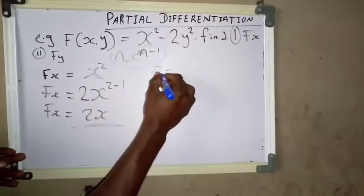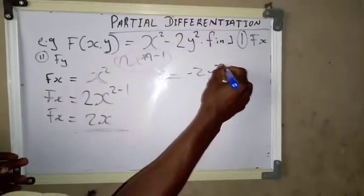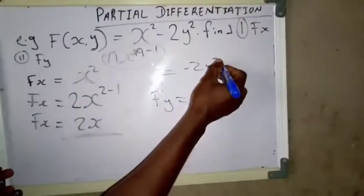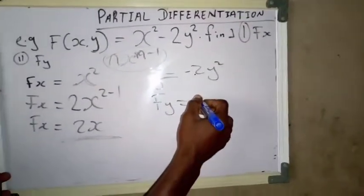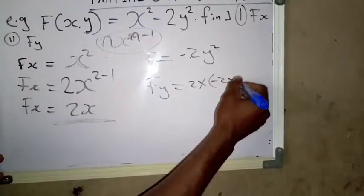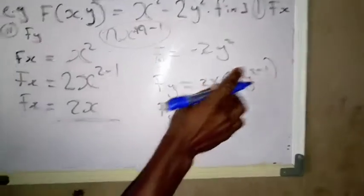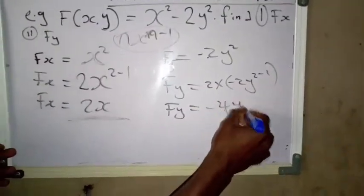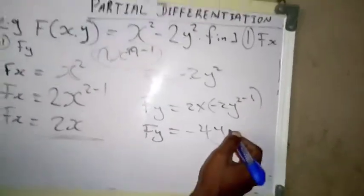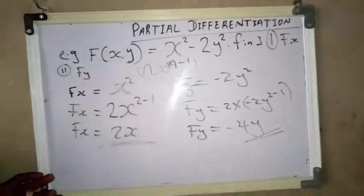For f_y, we differentiate only the y terms. Our f_y comes from minus 2y squared. Applying the power rule: 2 multiplied by minus 2y raised to 2 minus 1 gives minus 4y. This is our final answer for f_y.